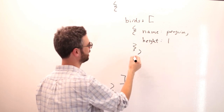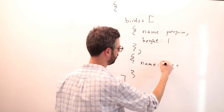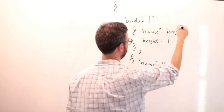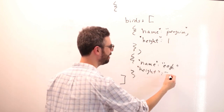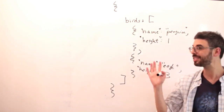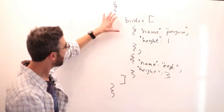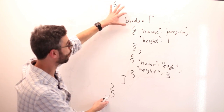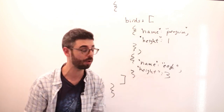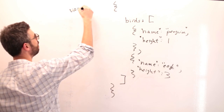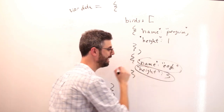And then the next thing in the array is an object where the name is eagle — and these should be in quotes — and the height of an eagle is three meters. Obviously I don't know anything about birds. So you can see how this now has a bit more complexity than just the sunflower, because what we have is an object that has a property called birds, that property is an array, and each element of the array is an object.